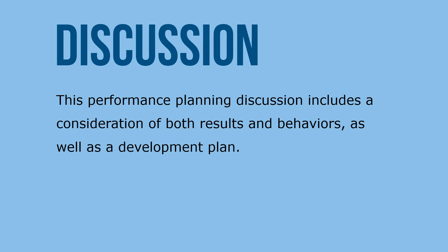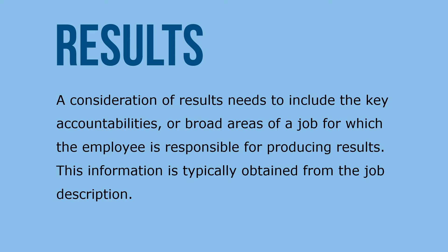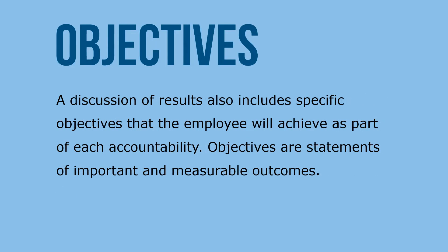includes a consideration of both results and behaviors, as well as a development plan. Results refer to what needs to be done, or the outcomes an employee must produce. A consideration of results needs to include the key accountabilities, or broad areas for a job, and what the employee is responsible for in terms of producing results. This information is typically obtained through the job description.